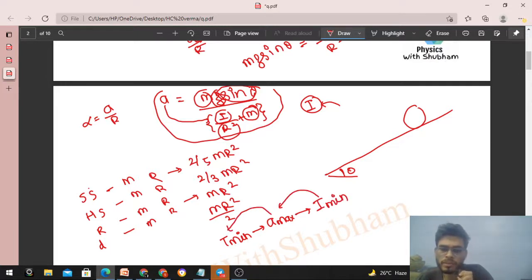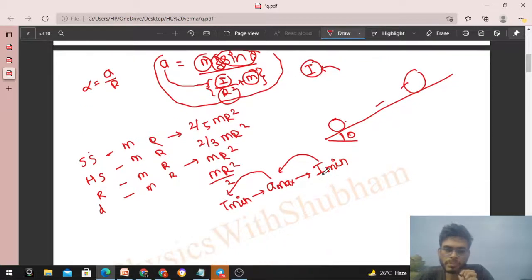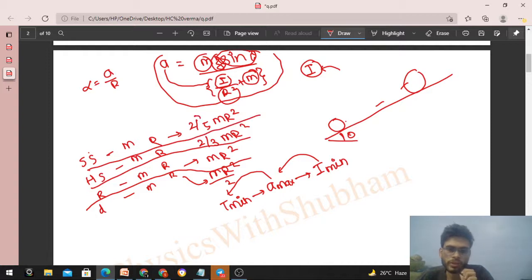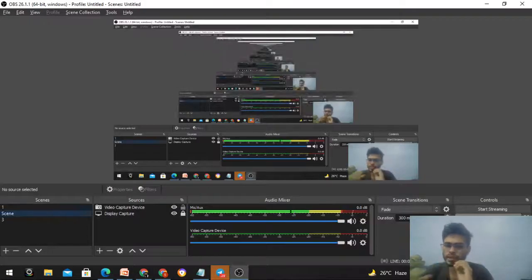For minimum time, we need minimum I. So solid sphere has minimum I, which means maximum acceleration and minimum time period. I think you have understood. Let me know if you still have any confusion. We can discuss further. Okay guys, keep working hard. Best of luck. Bye.